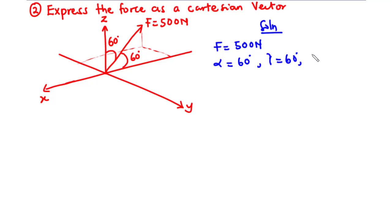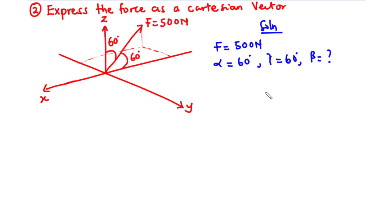But we don't know the value of the angle beta. So to express this force as a Cartesian vector, we first need to find the angle beta. Then we can multiply the magnitude of F by the direction cosines.